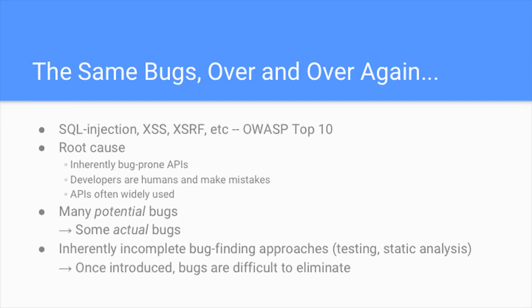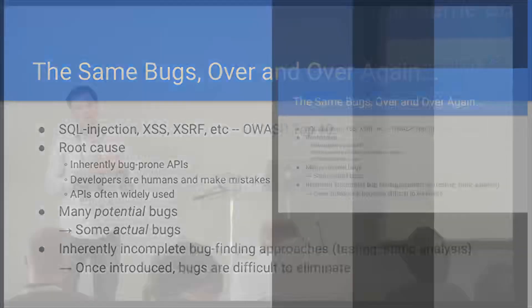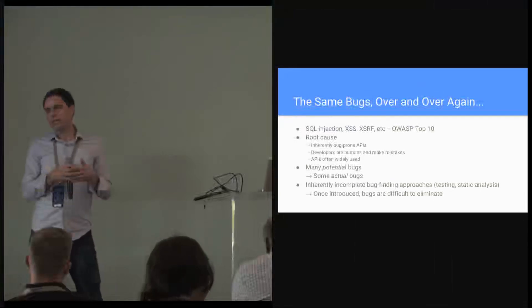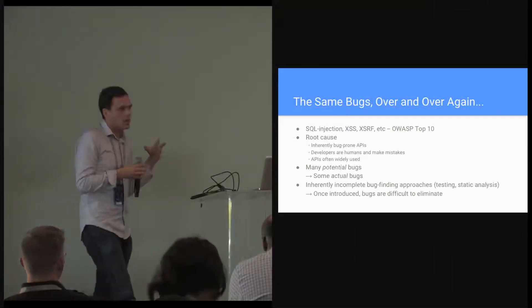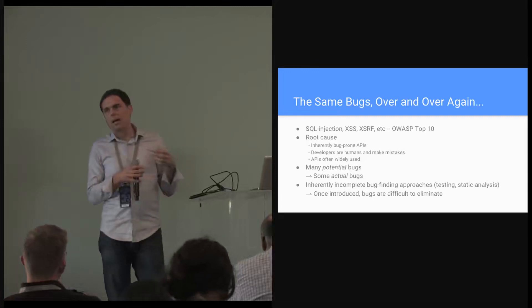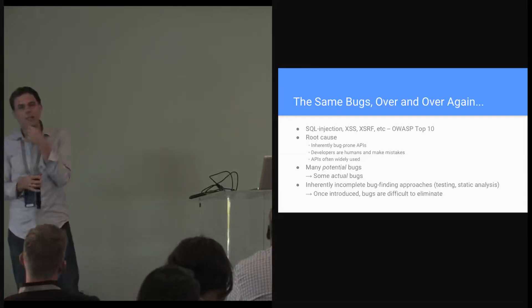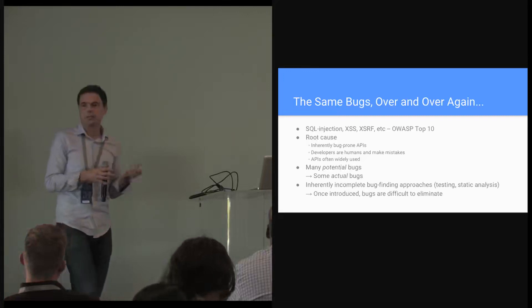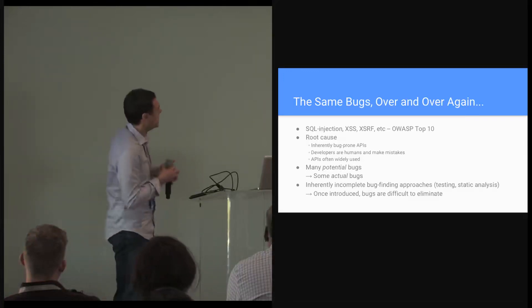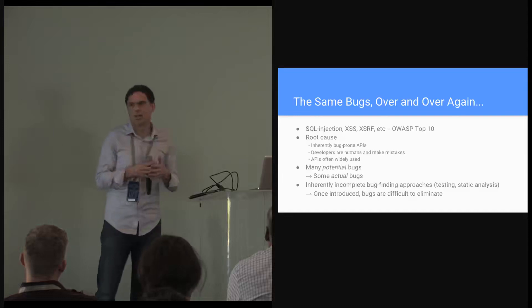My intuition for why this is the case comes down to the fact that developers write code on top of APIs that are inherently prone to particular classes of vulnerabilities. If you're writing code against a SQL query API and you're not careful, you'll introduce a SQL injection bug. Similarly, if you're writing code against the web platform API, you're dealing with a very complicated API full of sharp edges, with very many opportunities to introduce mistakes that result in security vulnerabilities.